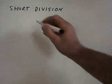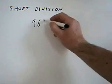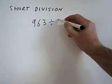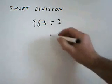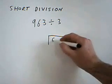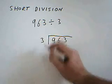Let's start with a straightforward one. 963 divided by 3. You just draw it like this. 963 divided by 3.